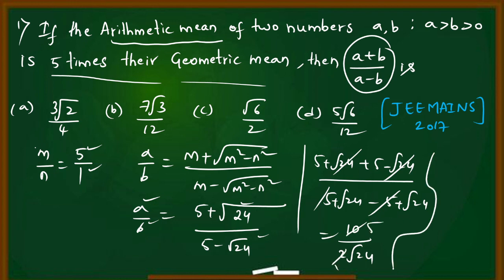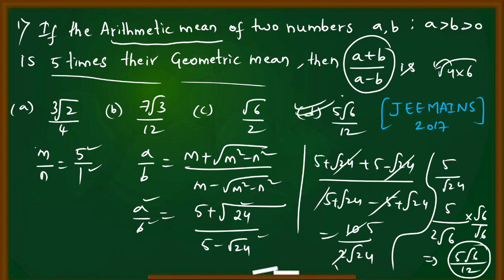The 2 and 10 cancel giving 5/√24. Now 5/√24 is not in the options. So we simplify: √24 can be written as √(4×6) = 2√6. This gives 5/(2√6). This is still not in options, so we rationalize by multiplying by √6/√6 to get 5√6/12. Option D is the right answer.